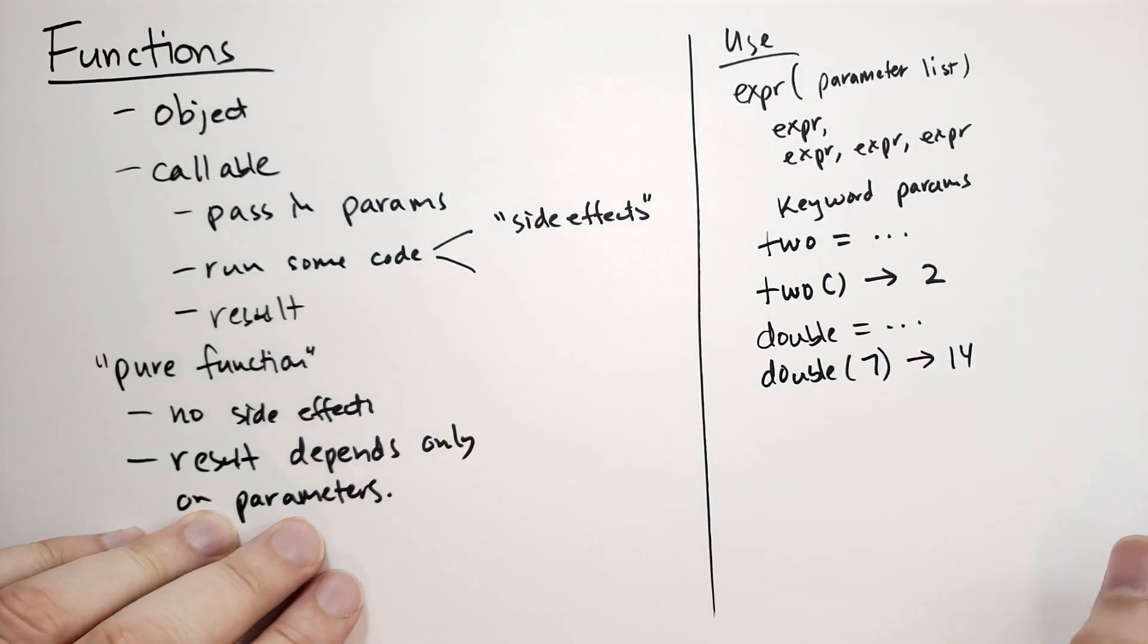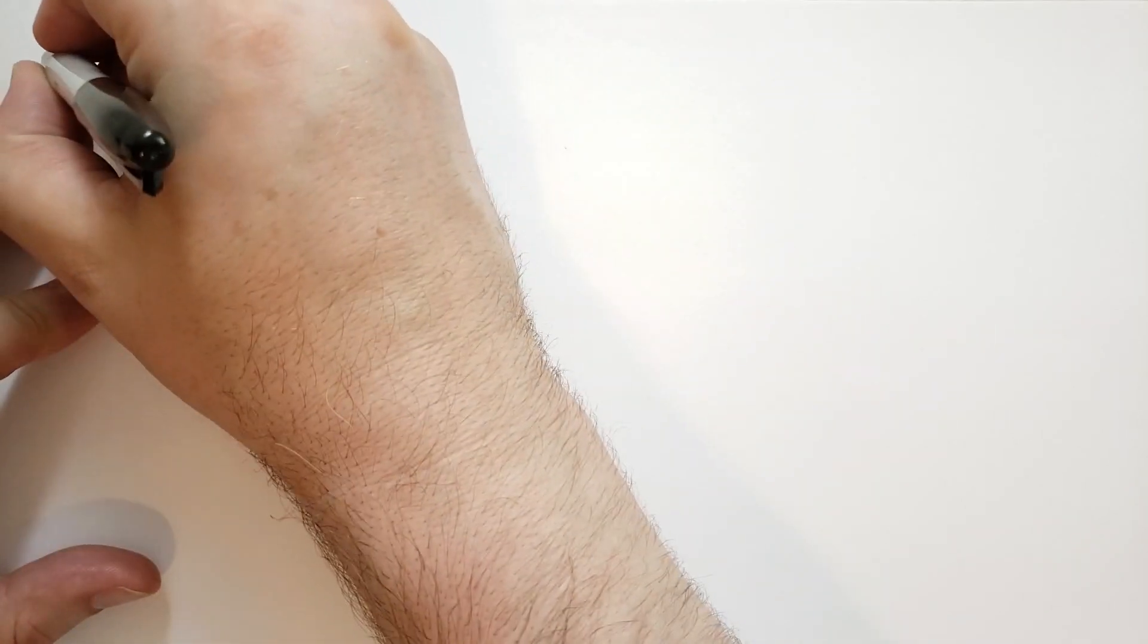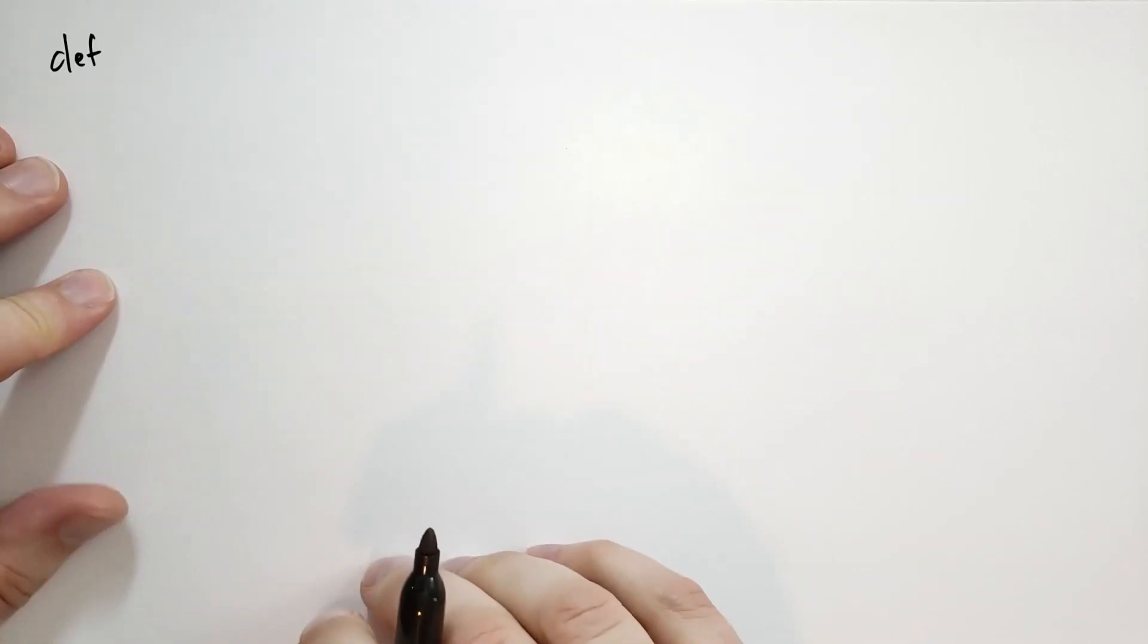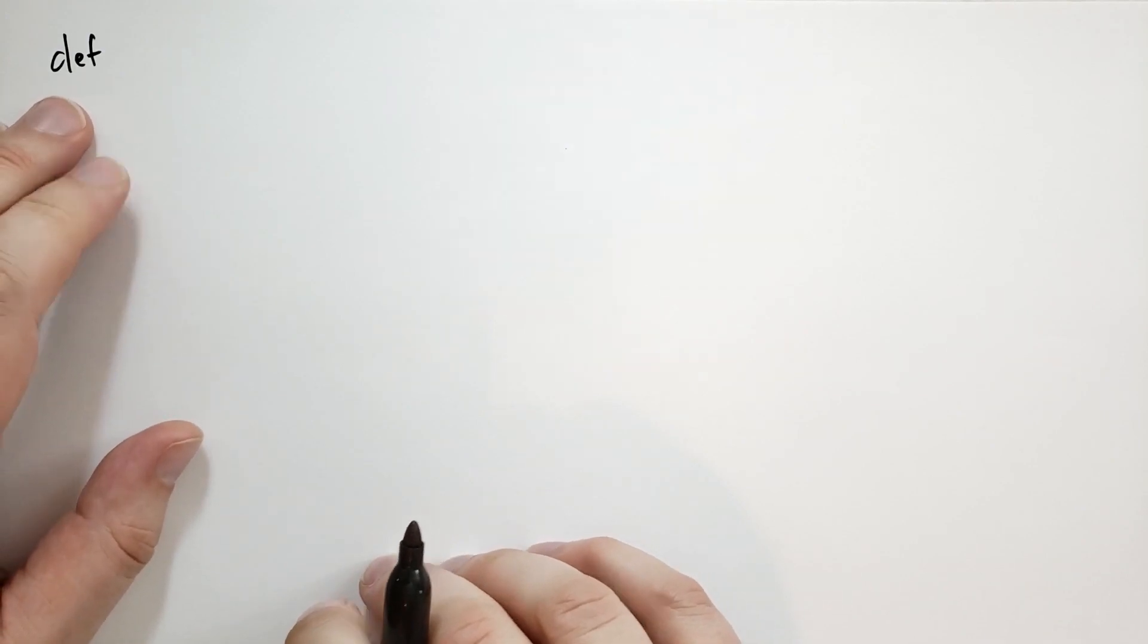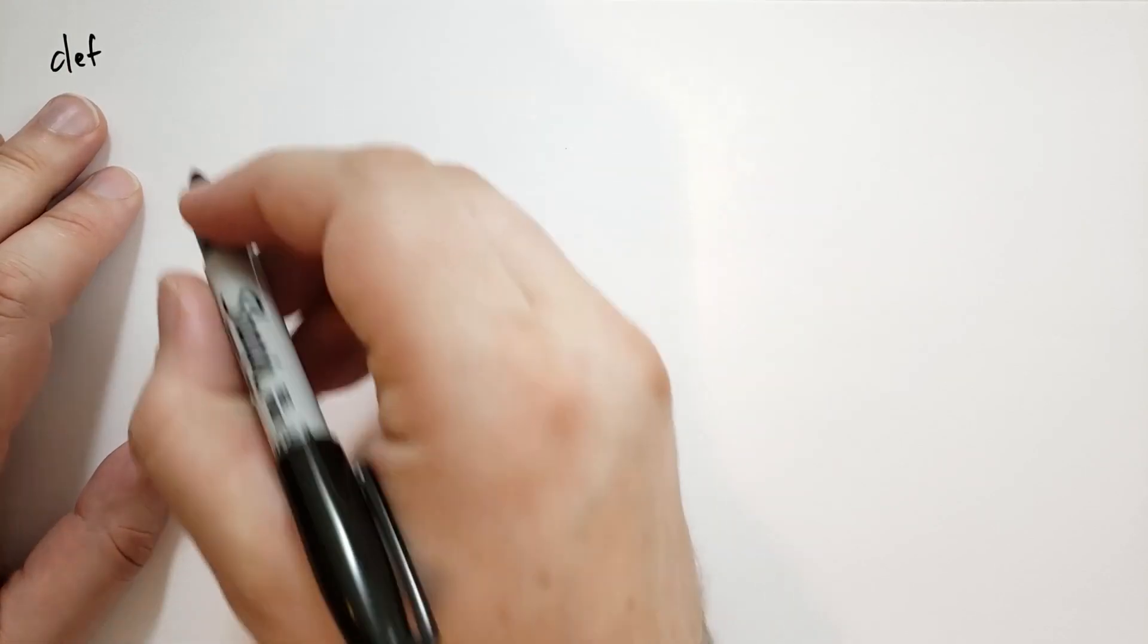How do we create new functions? This is where it gets really interesting. So in Python, when you create new functions, you use the def statement. I'm not going to cover the full def statement here. I'm just going to cover a subset, stuff to get you started programming. So you first start with def, D-E-F. Def is a keyword. You cannot create a variable called def. You cannot name a function def, anything like that.